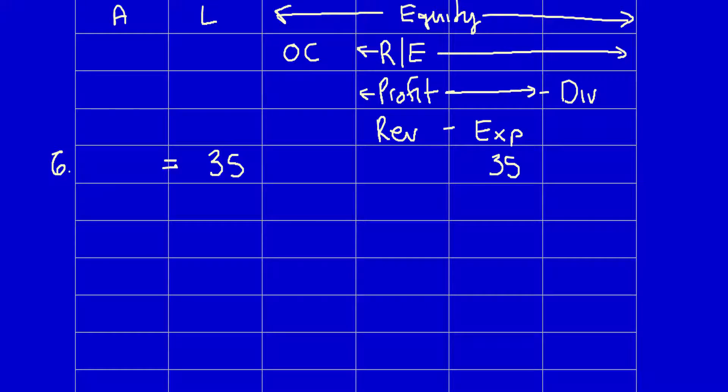Does the equal sign still work? The answer is yes. It doesn't look like it works because there appear to be two positive numbers on the right-hand side of the equal sign and a zero on the left-hand side. But remember that expenses flow up into the equation and become negative, so this is really positive 35 minus 35, which equals zero. No impact on assets.